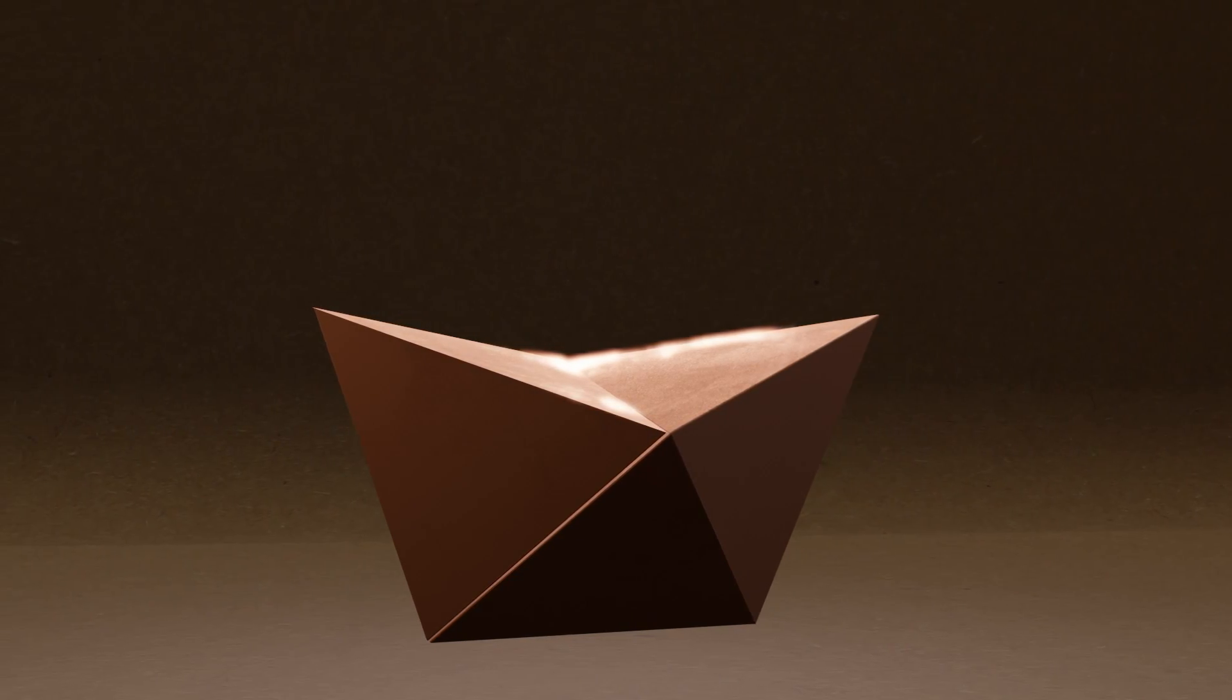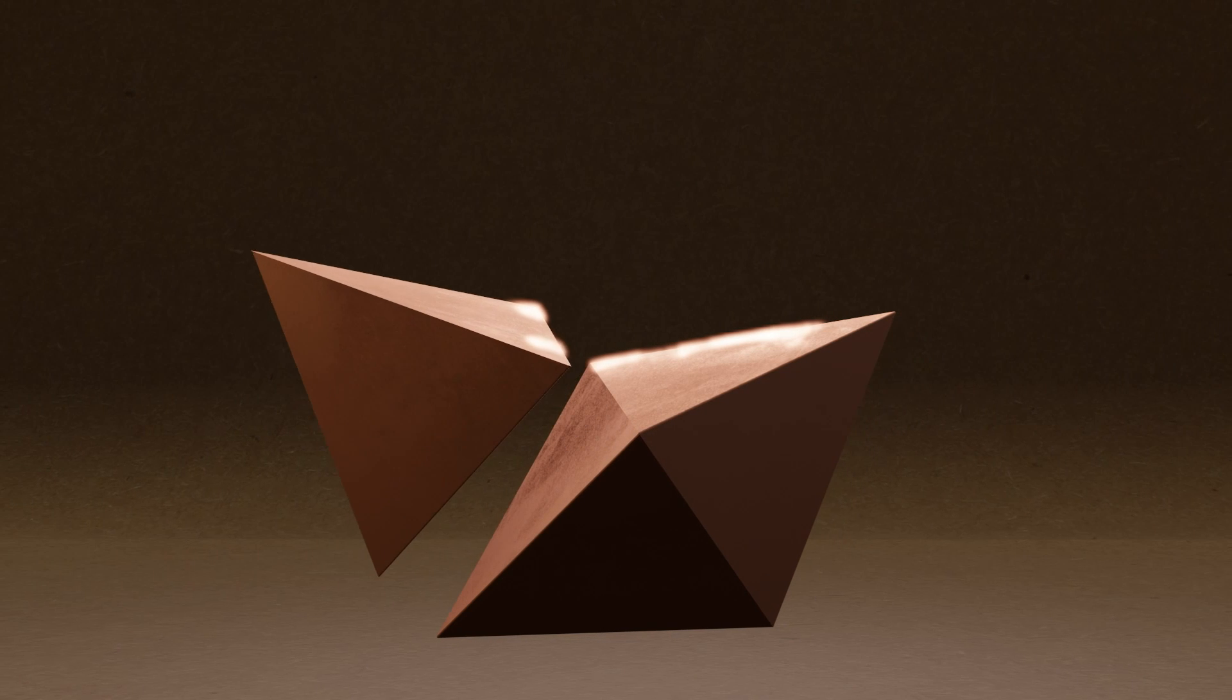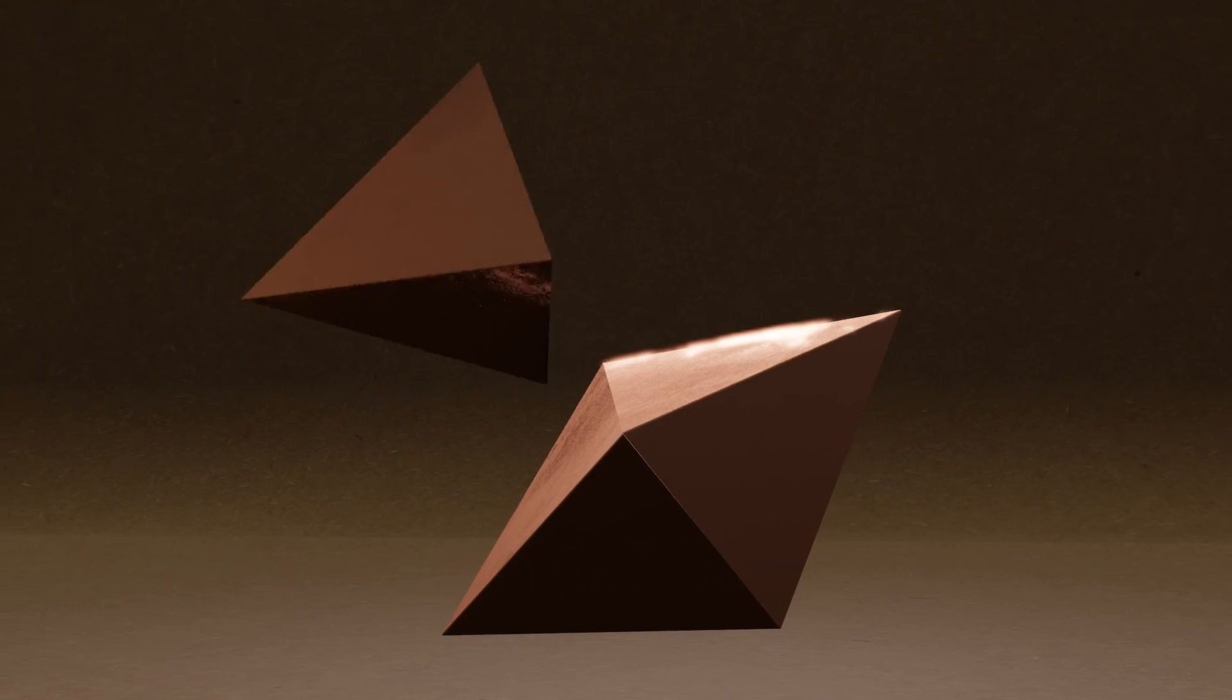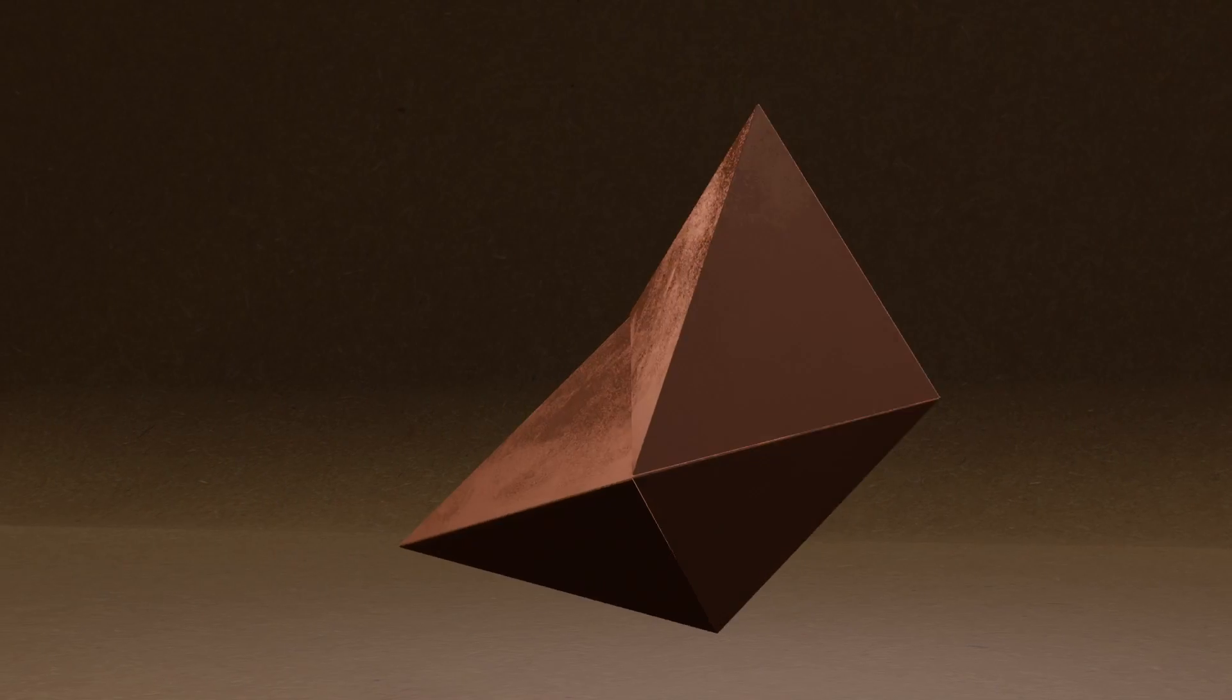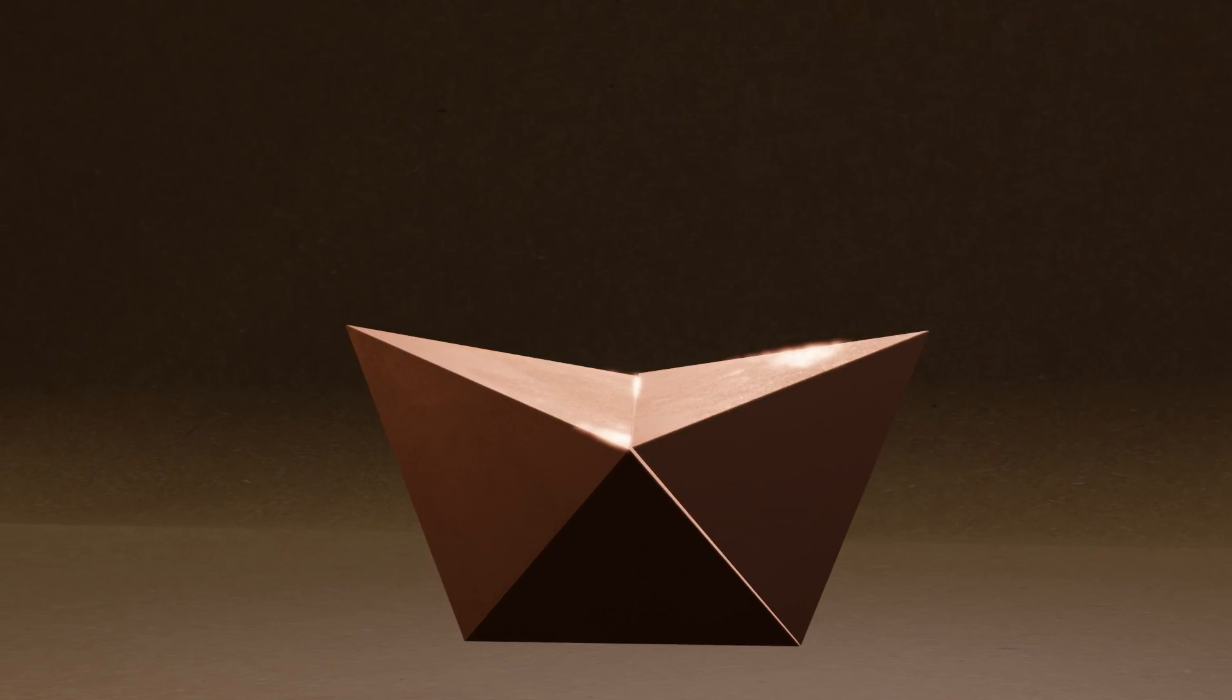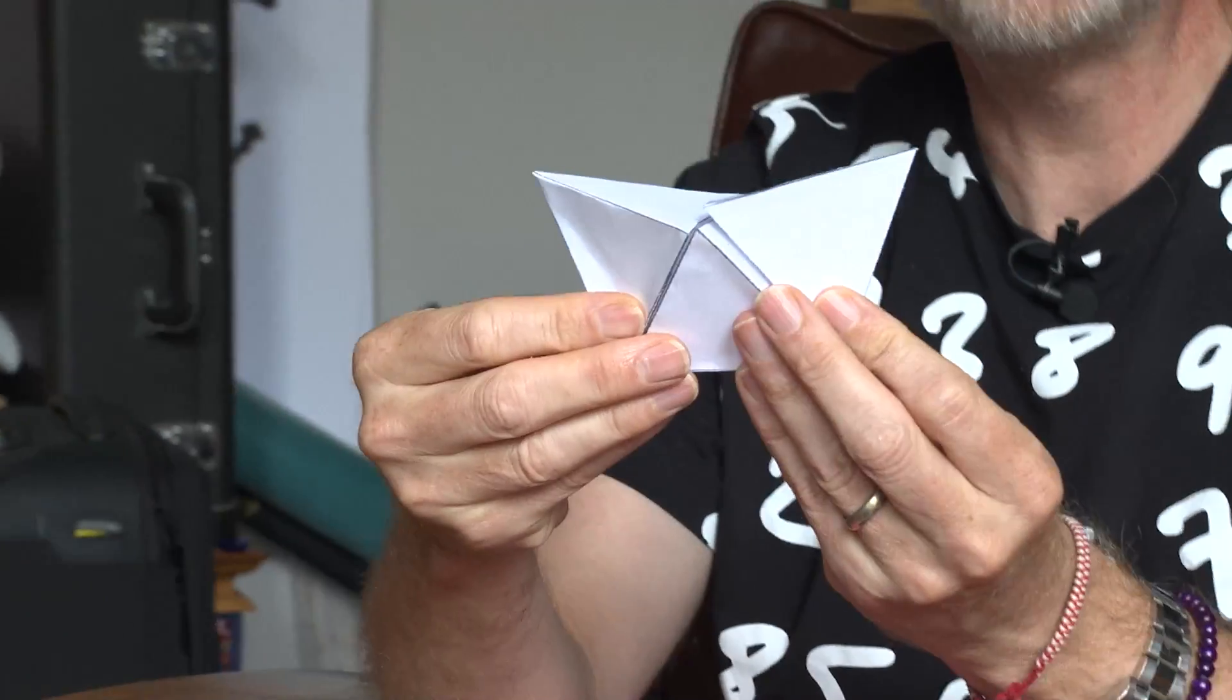So you might say, okay, well that's one way to put the tetrahedrons together, but maybe I can fuse this on a different edge and look, I've got something different. But of course the point is that symmetry means that I can turn this and I've always got that little boat structure.